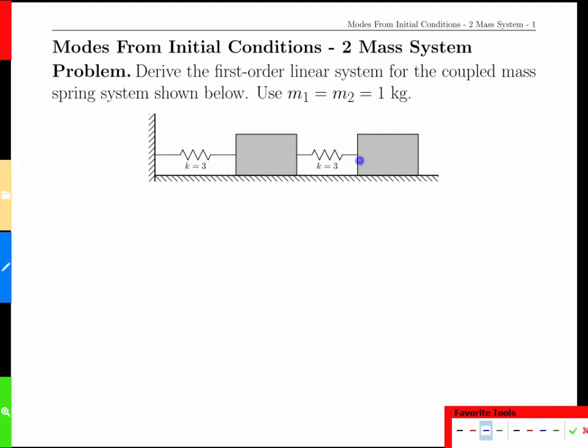As an example of a 4-variable system, we're going to look at our double mass system here with k equals 3 for both springs and both masses having 1 kilogram of mass.